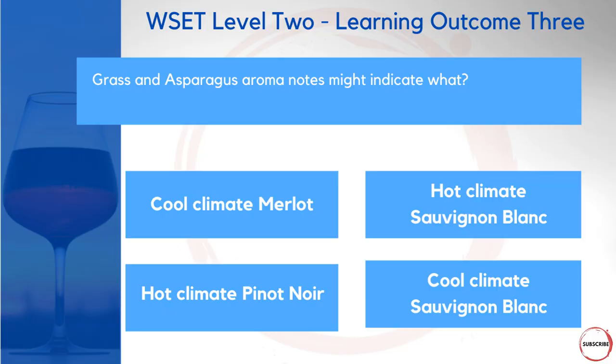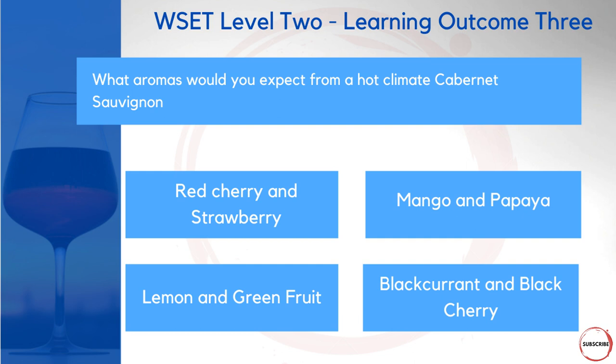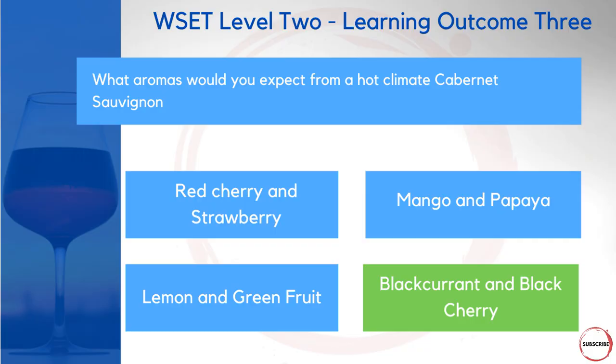Our first question here associates specific aromas with a specific climate. Grass and asparagus might indicate what? A cool climate Merlot, a hot climate Sauvignon Blanc, a hot climate Pinot Noir, or a cool climate Sauvignon Blanc? Grass and asparagus as an aroma would be associated with cool climate Sauvignon Blanc. Next: what aromas would you expect from a hot climate Cabernet Sauvignon? Red cherry and strawberry, mango and papaya, lemon and green fruit, or blackcurrant and black cherry? The answer is blackcurrant and black cherry.